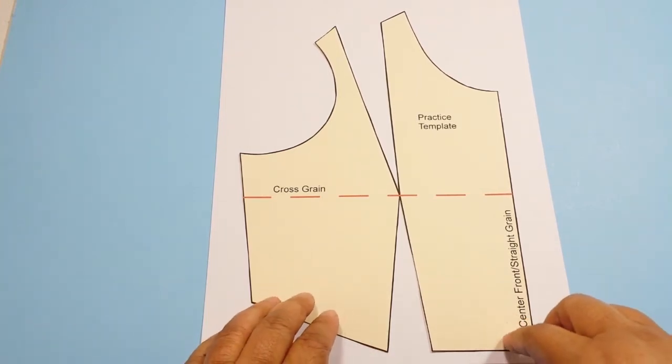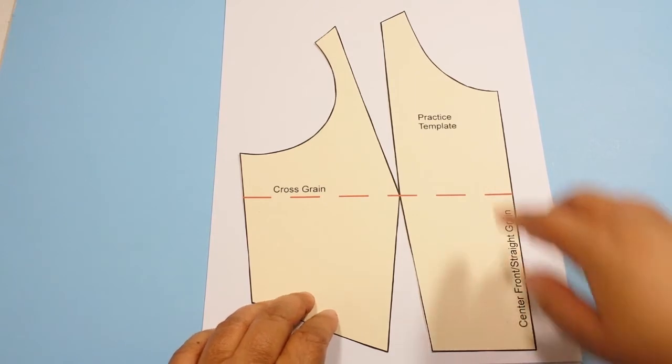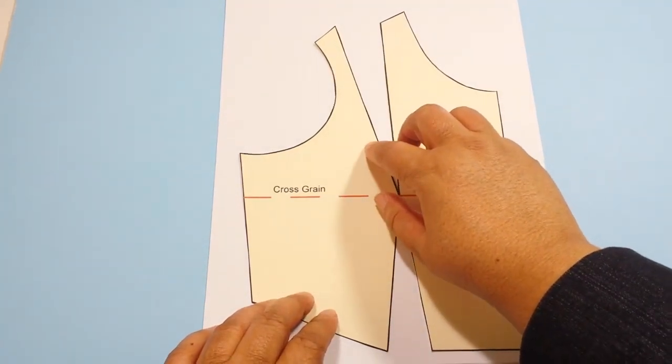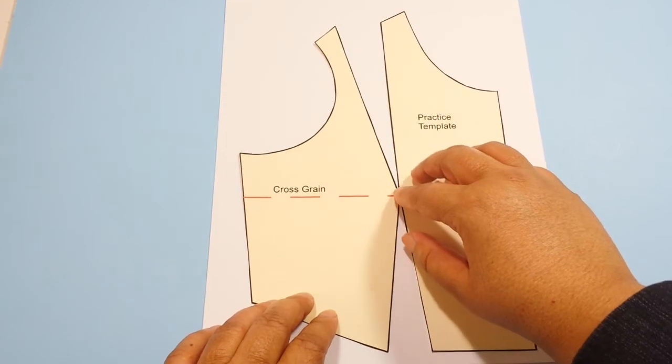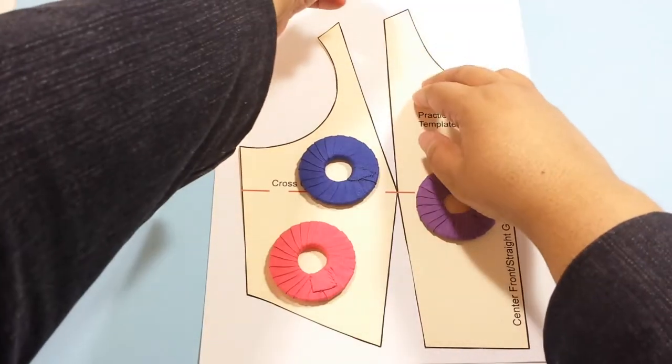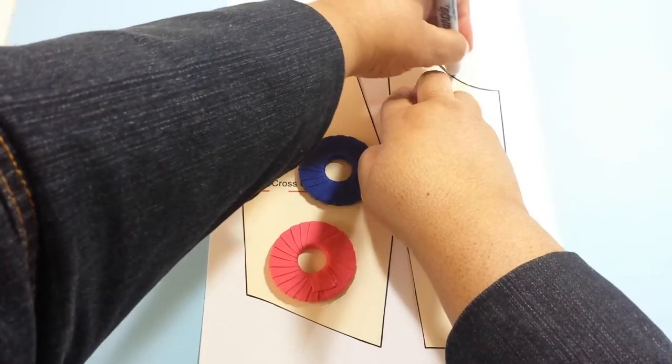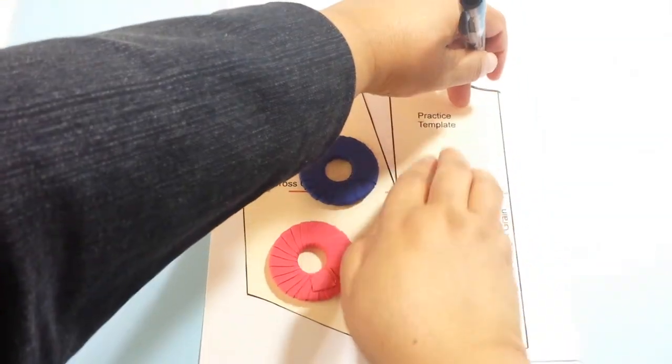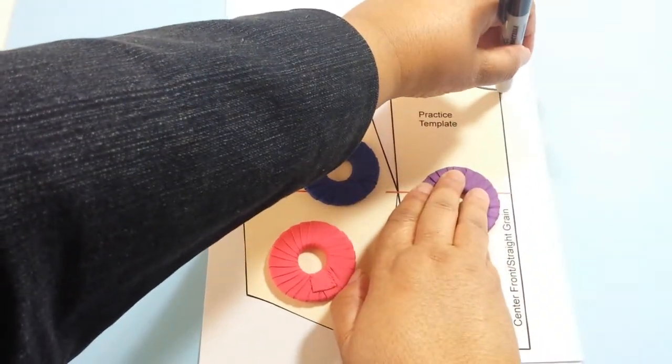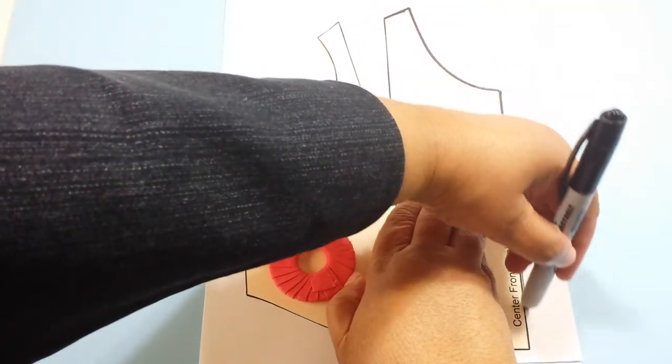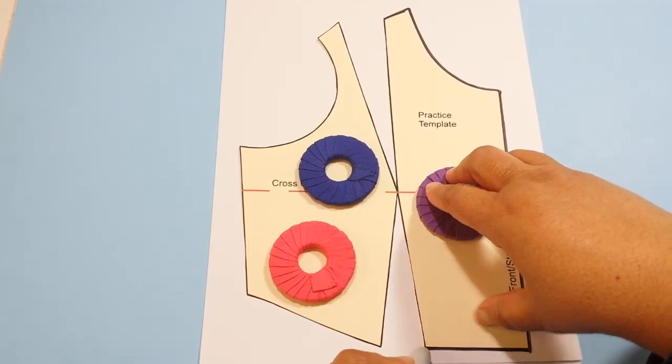So in this case, we're going to start tracing from our shoulder dart because that's the dart we are getting rid of, or combining with our waist dart. We're starting at our shoulder dart, tracing our neckline, our center front, over to our waist dart.